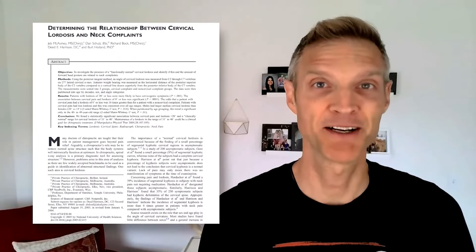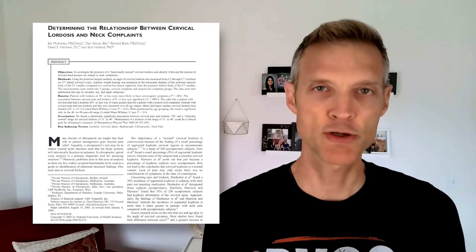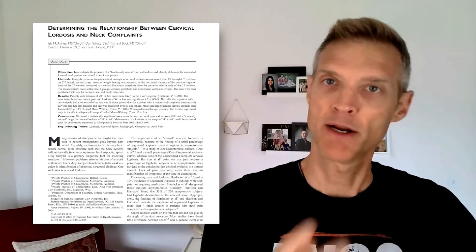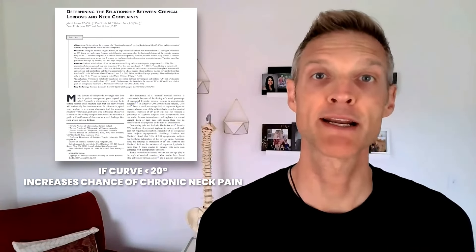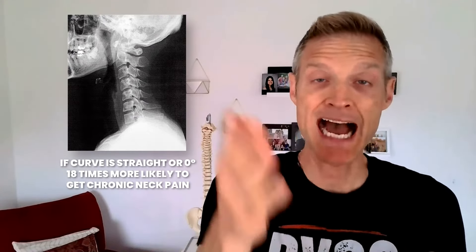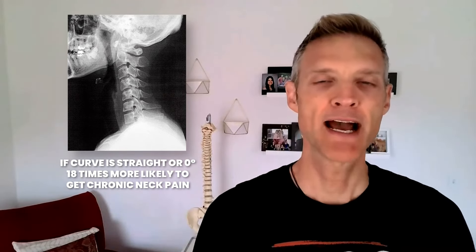One study, published in the Journal of Manipulative and Physiologic Therapeutics — I'll put an image so you can see that — showed that cervical lordosis below 20 degrees significantly increases your chance of chronic neck pain. The normal curve is between 30 and 42 degrees. If this curve is less than 20 degrees, or completely straight at zero degrees, or in the opposite direction, you are 18 times more likely to have chronic neck pain than no neck pain. That shows you how important this curve is for your spine.